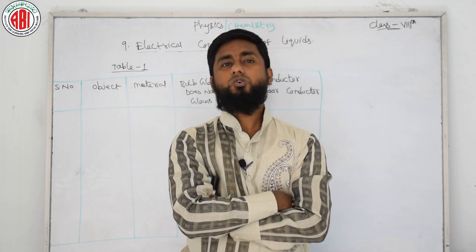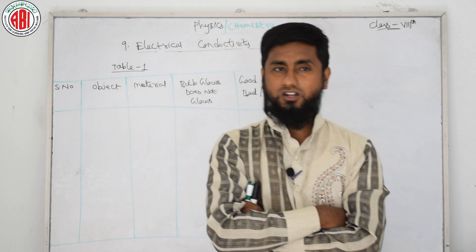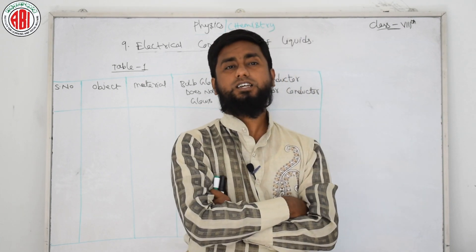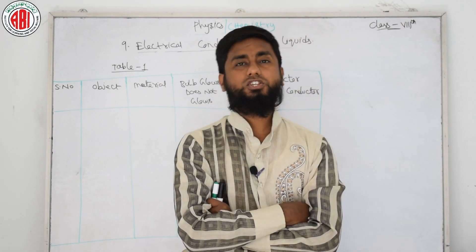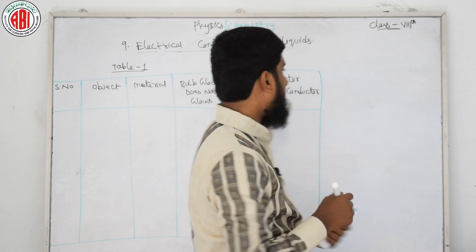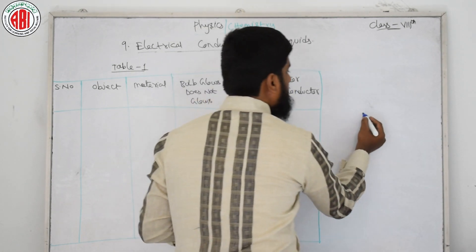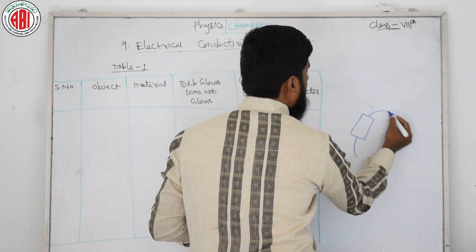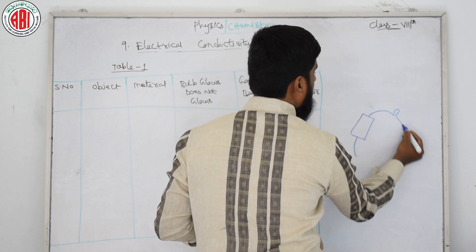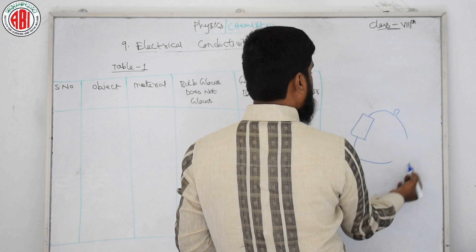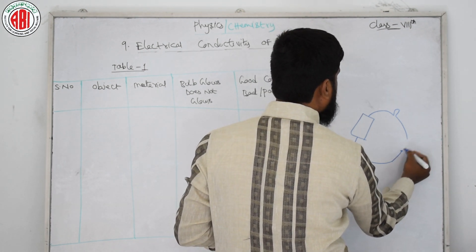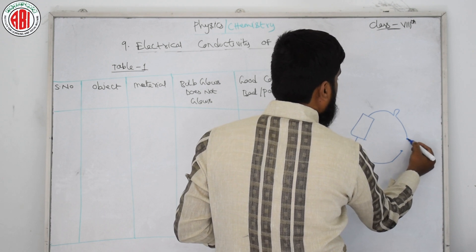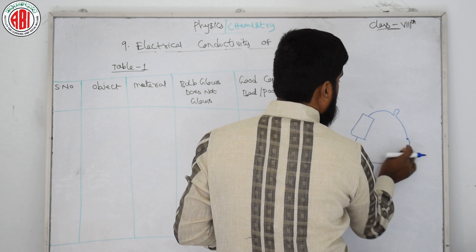We will recall and revisit through activities, testing different materials to check whether electricity passes through them. The circuit will be set up with a cell — positive and negative terminals. We put an LED in the circuit and leave one free end. We will test different metals one by one: first, second, third material, and so on.